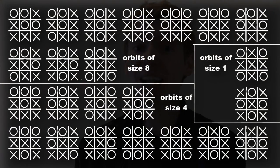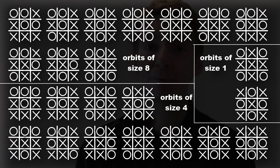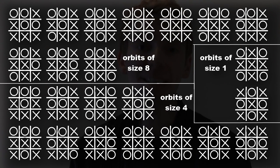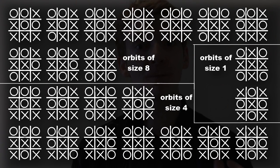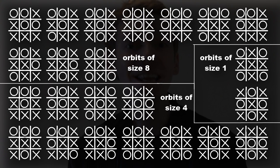If we take all the different orbits and add up all the grids in them, we should get 126. If we take one grid from each orbit, we get all the essentially different grids — not including rotations and reflections. Checking this, you find 23 different orbits: ten orbits of size eight, eleven orbits of size four, and two orbits of size one. All together that adds up to 126 grids. So that's your answer — 23 orbits — though it is a bit laborious.